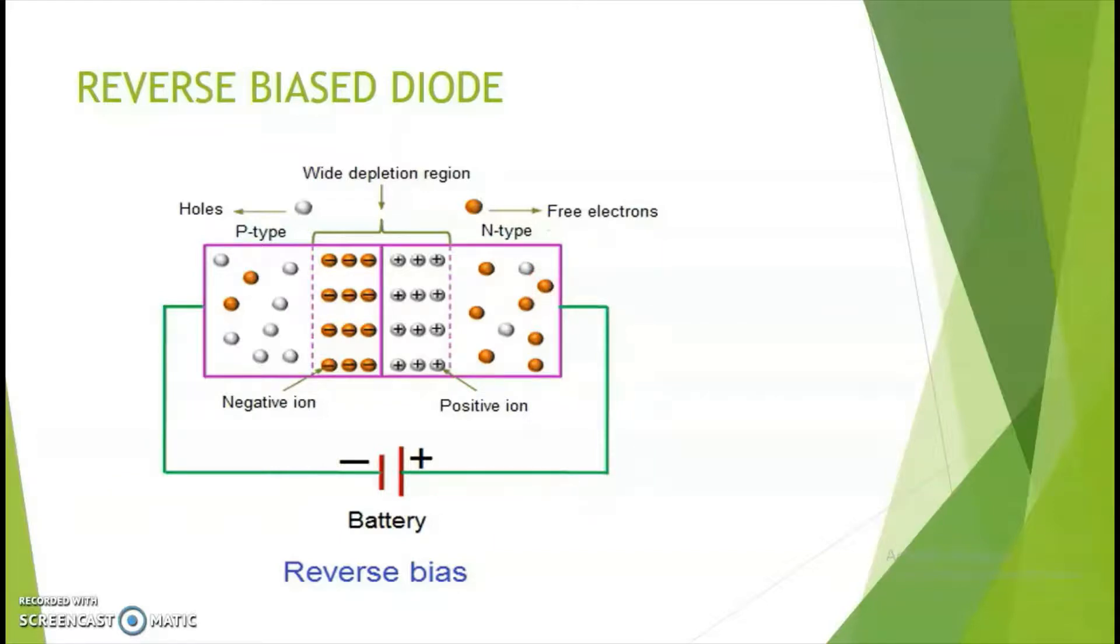The battery pulls out more charge carriers towards it from each side and the depletion region becomes widened. The current flow in reverse bias is only due to minority carriers.